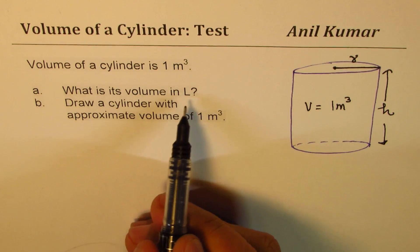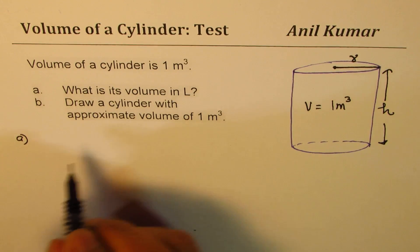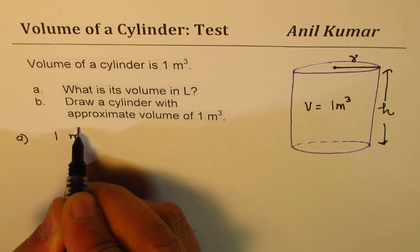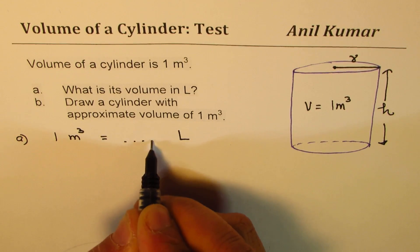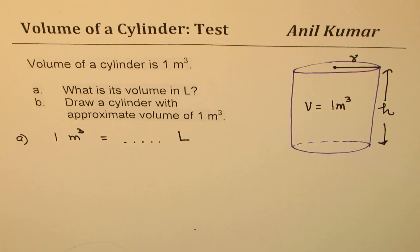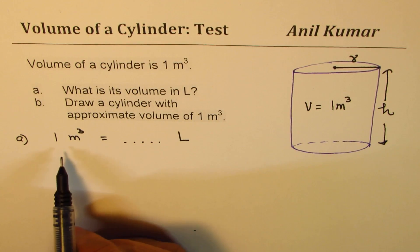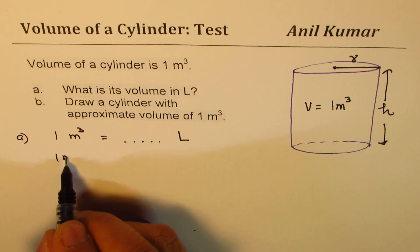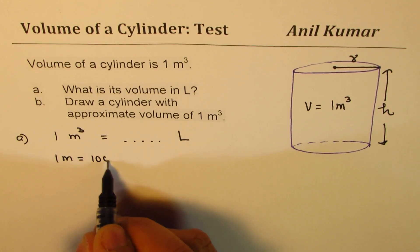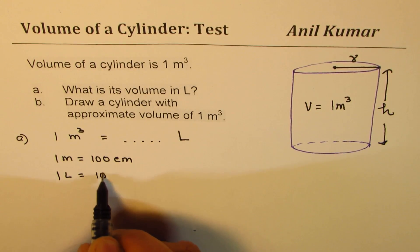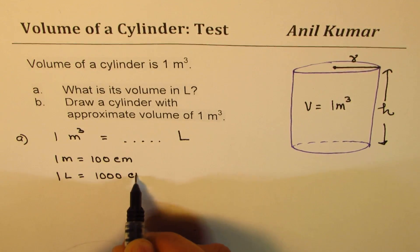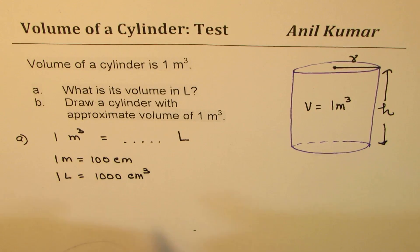But let's begin by converting units first. So A, we want to know one meter cube is after all how many liters. How can we find this? Well, we know something. We know one meter is equals to 100 centimeter. And we also know that one liter is 1000 centimeter cube.